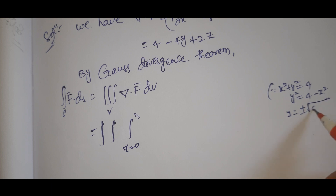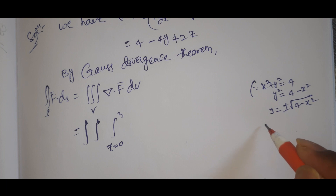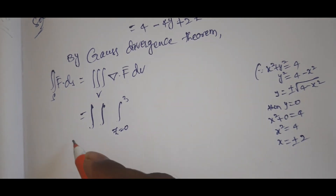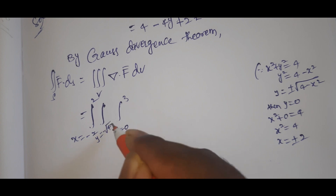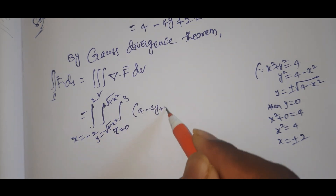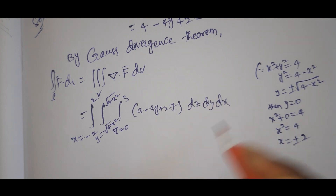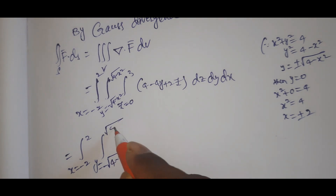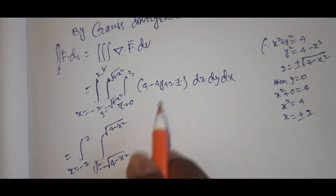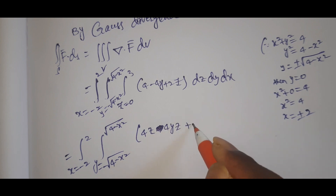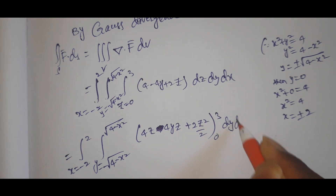For the x and y limits: x² + y² = 4, so y² = 4 − x². On the x-axis, y = 0 gives x² = 4, so x = ±2. Therefore x goes from −2 to 2, and y goes from −√(4 − x²) to √(4 − x²). The integrand is (4 − 4y + 2z) dz dy dx.